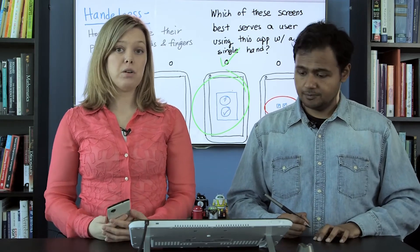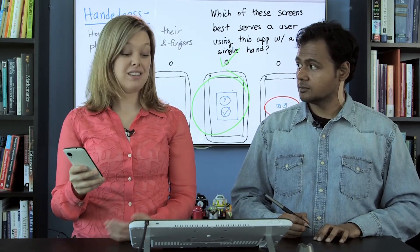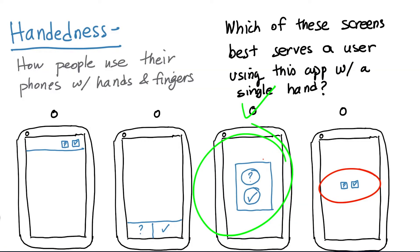When users are on the go, it's even harder for them to touch precise little areas. These other two are not so good because if you look at the placement of these buttons, they're actually in an area of the screen which is not very easy to touch. Just pull out your phone and try and touch those areas — it's not easy.